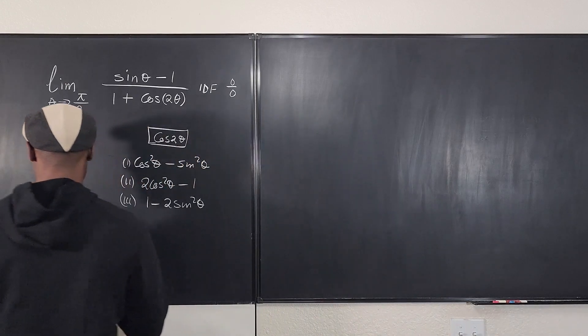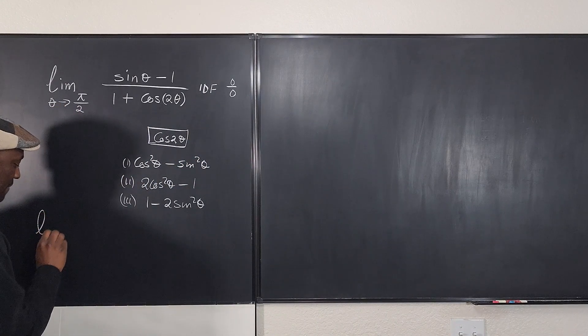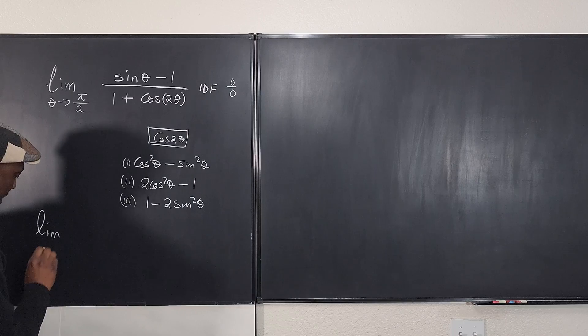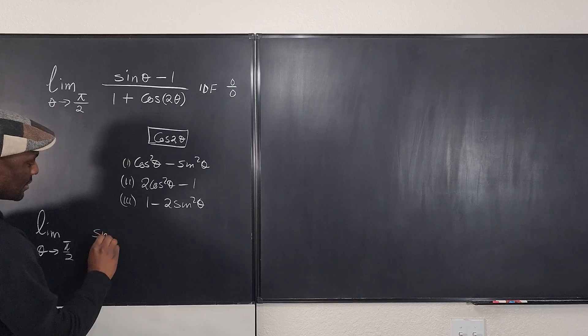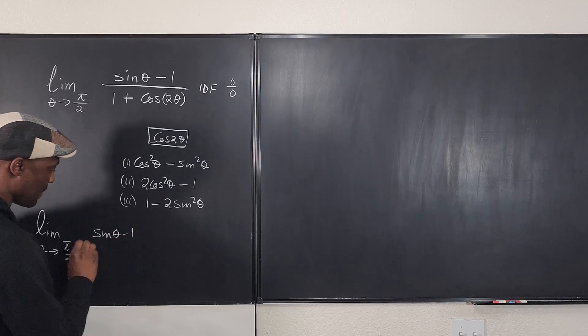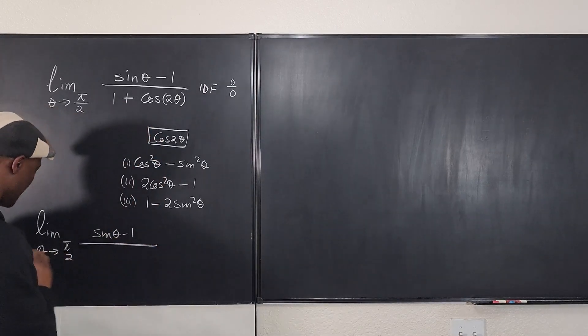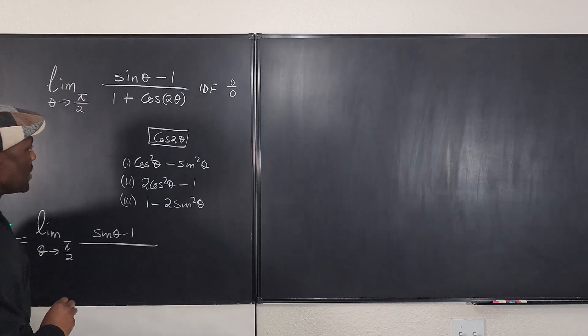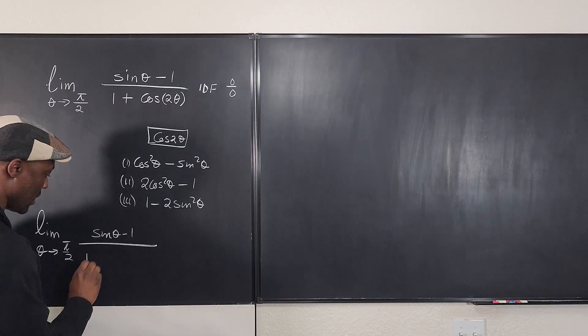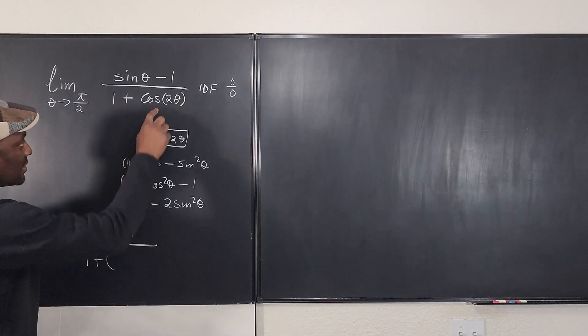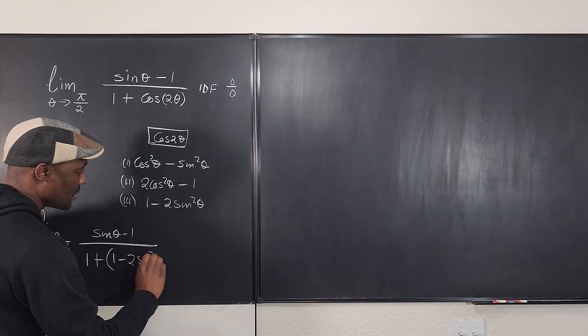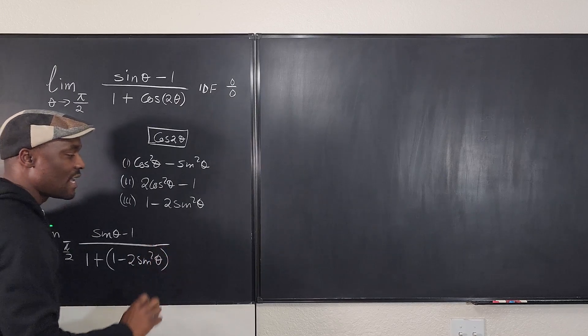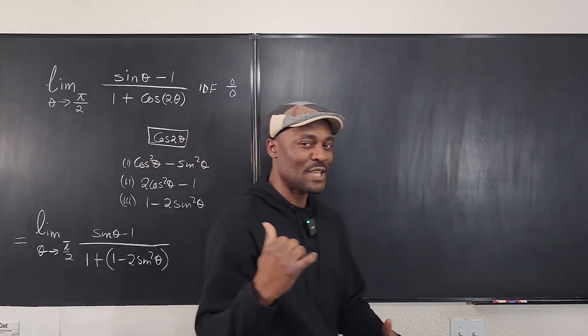So we can say that this is the limit as θ goes to π/2 of sinθ minus 1 over, instead of writing this, let's put this here, will be equal to 1 plus, in parentheses, I'll replace this with 1 minus 2sin²θ. And if you can see the future, you'll see where this is going.